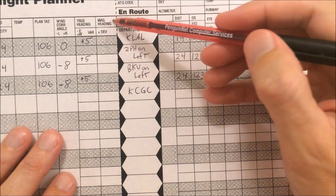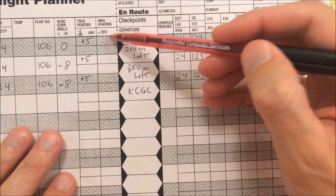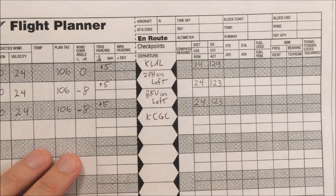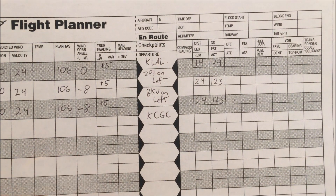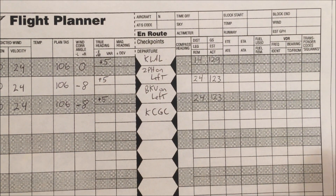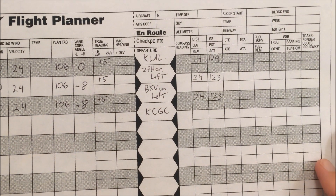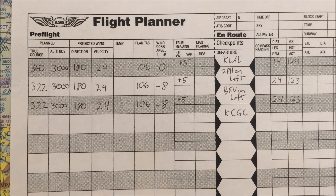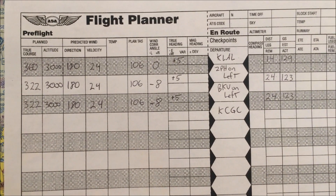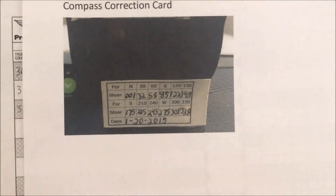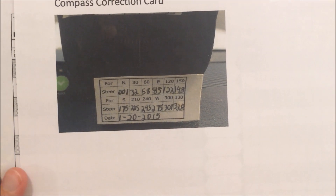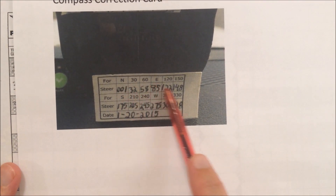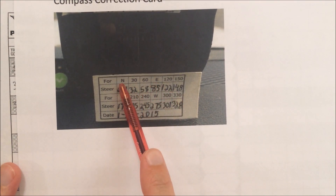Next up is magnetic deviation. Magnetic deviation is supposed to take into account the electronics in your airplane, and it's calibrated on a per-airplane basis depending on the direction that you're going. So what you need to do is go take a picture of or find the compass correction card in your airplane, and it gives you varying corrections depending on what direction you're going.